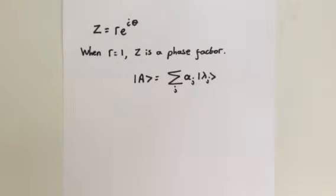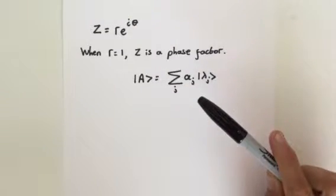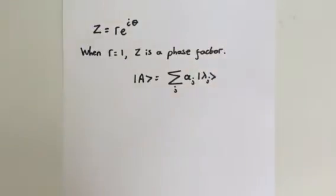What does it mean to ignore the overall phase factor? It means we can multiply any state vector by a constant factor, e to the i theta, where theta is a real number, without changing the state vector's physical appearance. To see this, let's multiply this equation by e to the i theta and call the result b.